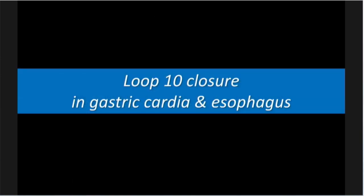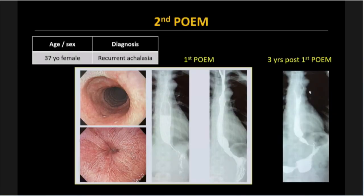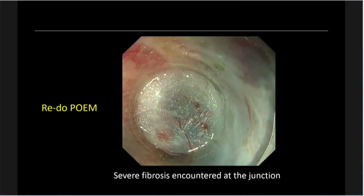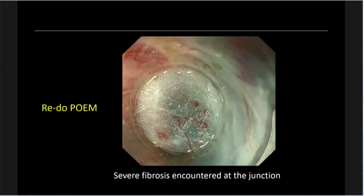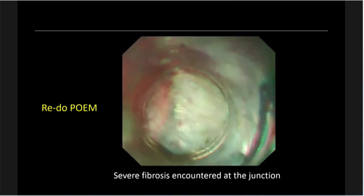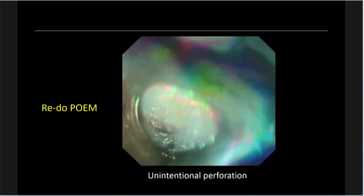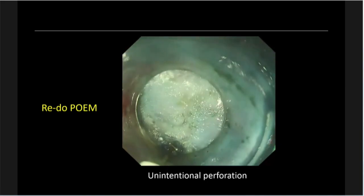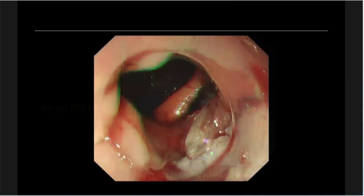Next, I'd like to talk about another closing technique — loop ten. This is a case of a second POEM procedure. Three years after the first POEM procedure, the patient came back to our clinic because of recurrence of symptoms. The submucosal space was very tight and fibrotic, making it a very difficult procedure. We completed the myotomy but had several mucosal injuries.